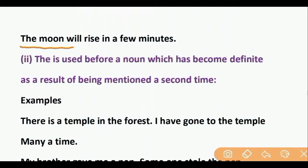Second point: 'The' is used before a noun which has become definite as a result of being mentioned a second time. When we use a noun for the second time, we use the definite article 'the.' For the first time we use the indefinite article A or AN. Example: there is a temple in the forest — 'a temple' first mention. I have gone to the temple many a time — 'the temple' second mention.